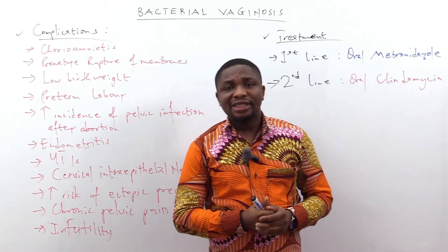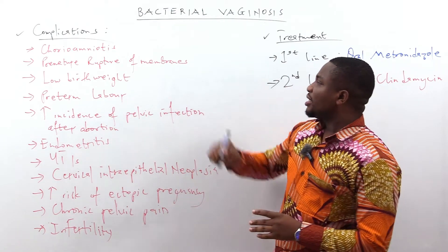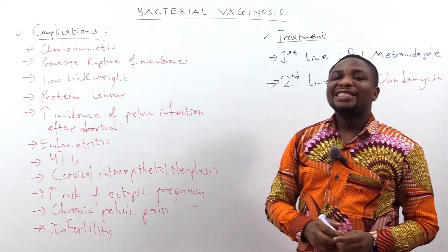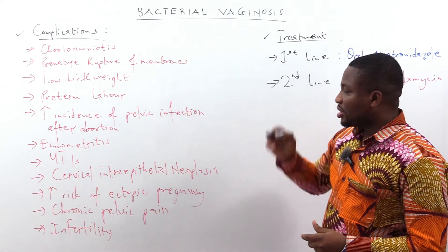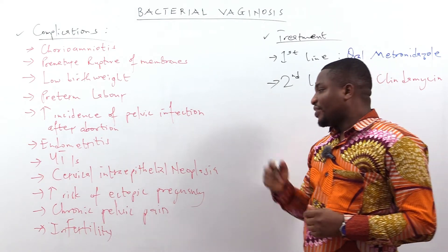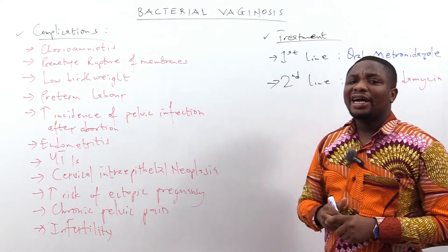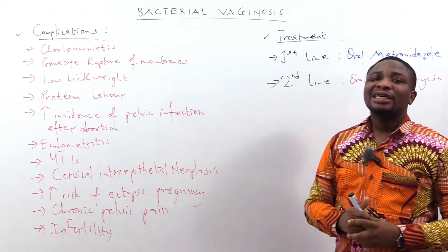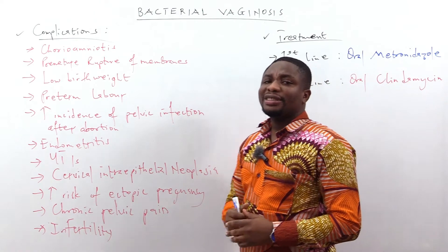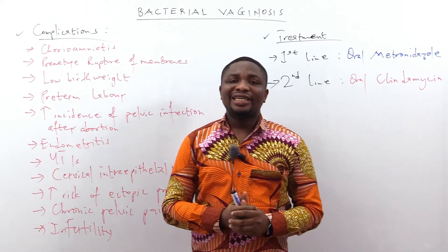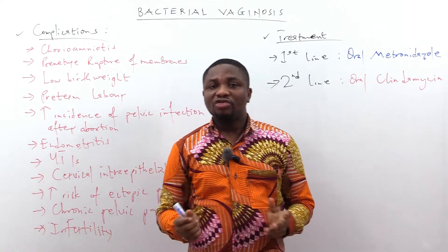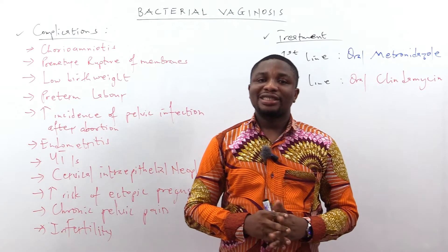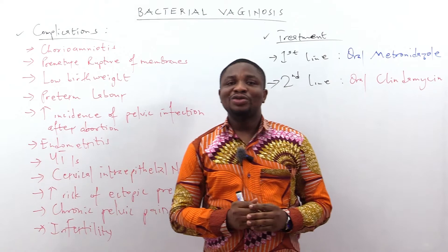Let's look at the complications and treatment. Complications include chorioamnionitis, premature rupture of membranes, low birth weight, preterm labor, high incidence of pelvic infections after abortions, endometritis, urinary tract infections, cervical intraepithelial neoplasia, increased risk of ectopic pregnancy, chronic pelvic pain, and infertility. For treatment, the first-line drug is oral metronidazole, and the second line is oral clindamycin.